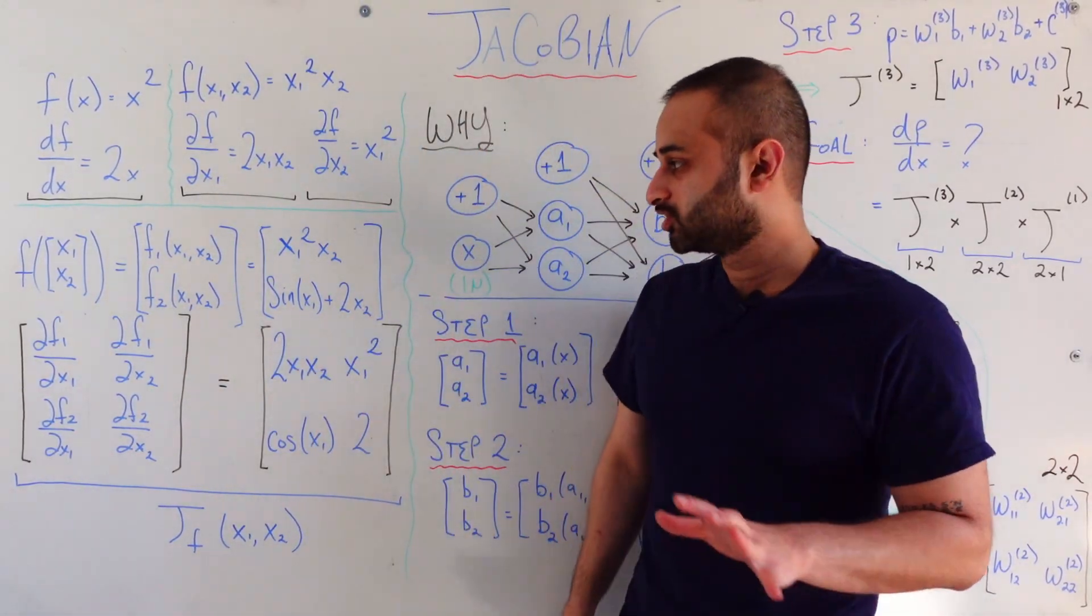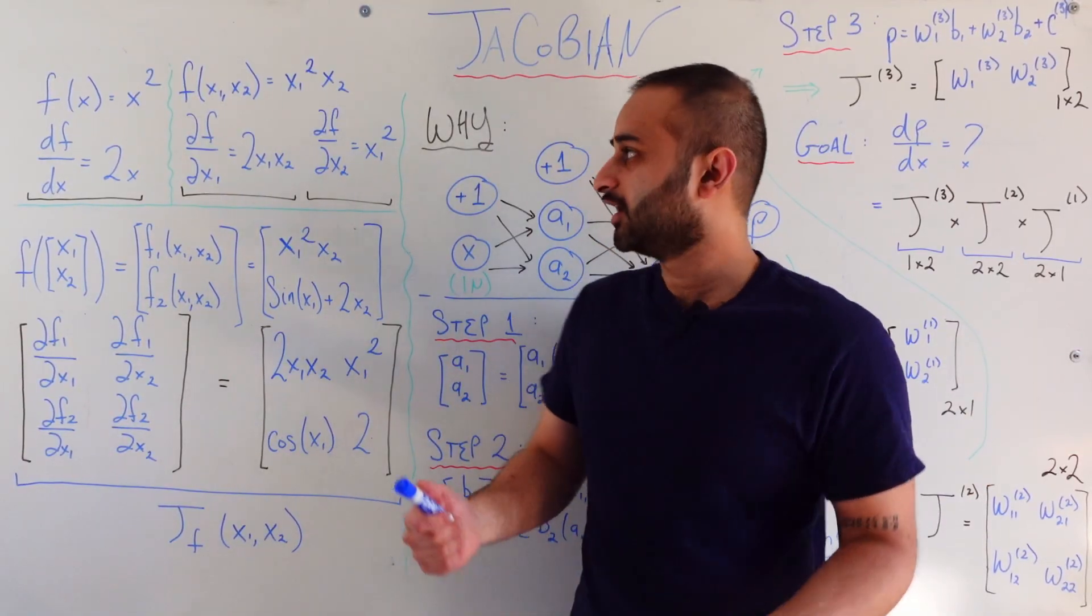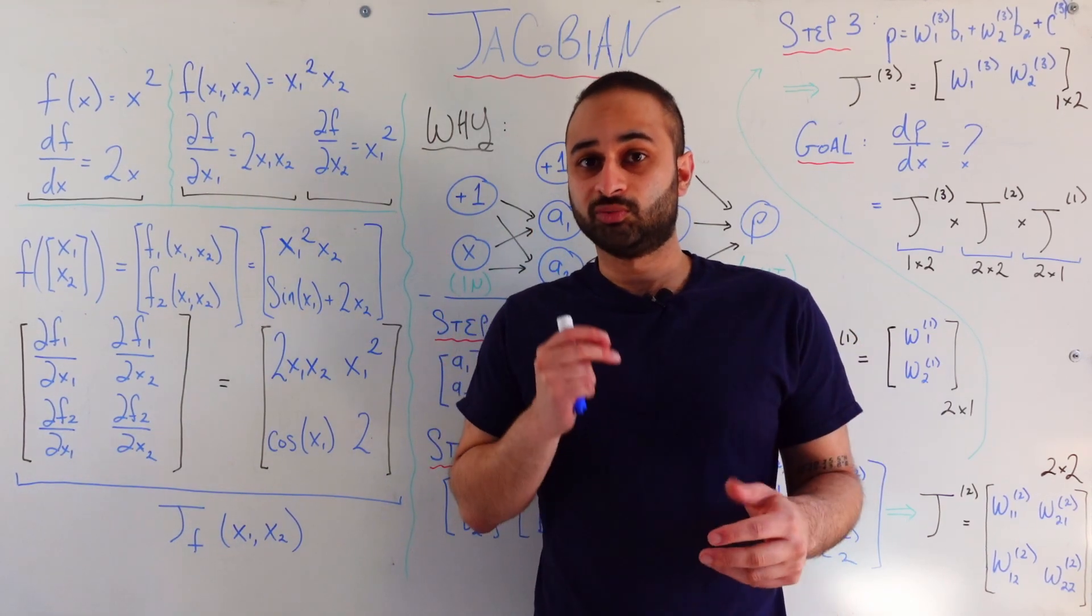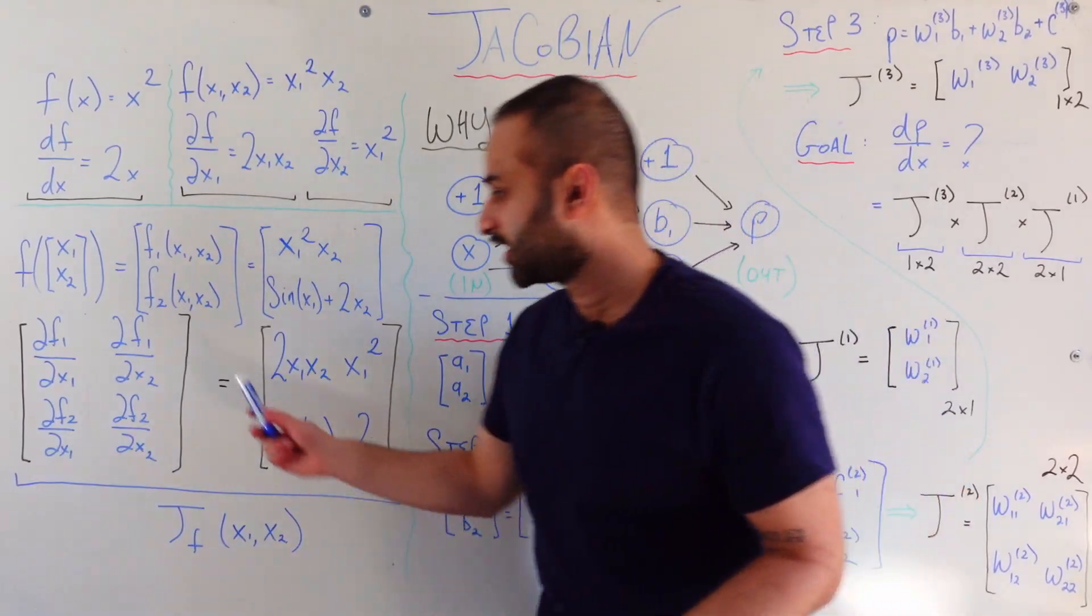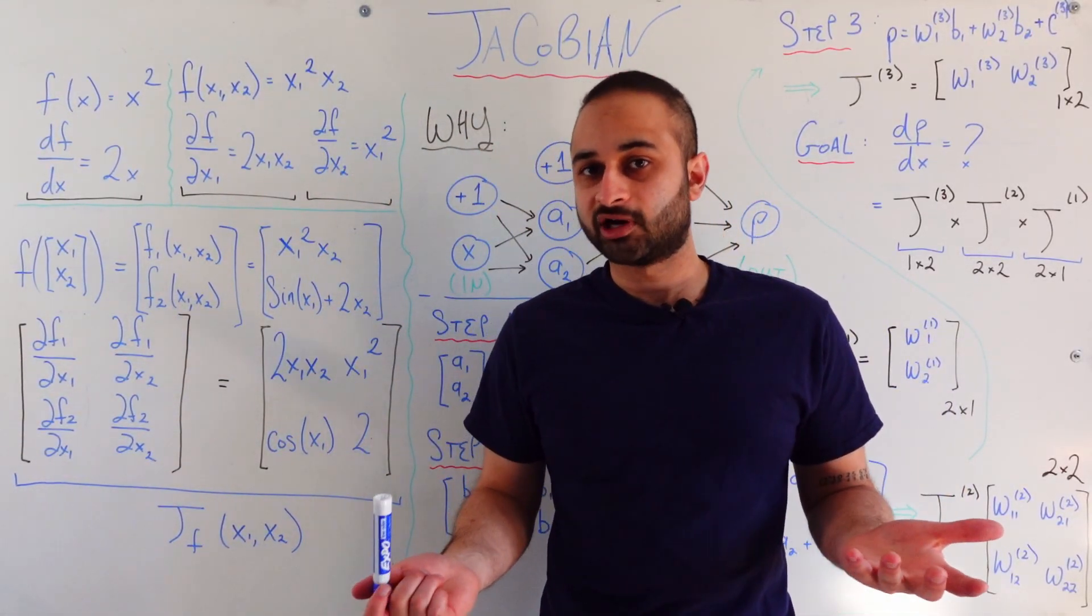So now that we're all on the same page about what's going on here, what does it mean to take derivatives in this case? Well, we can just extend directly from this example, because now we have two variables and two functions. So there should be two times two or four possible derivatives to get in this case. And that's exactly what's collected in this table here. Or matrix, that's probably the better way to think about it.